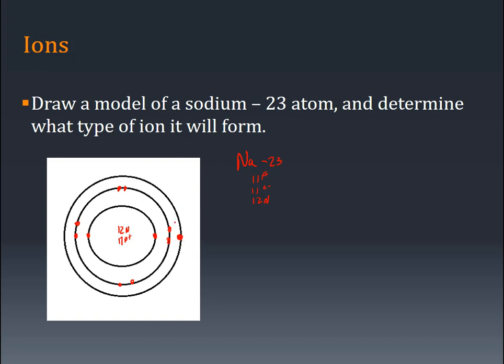But I need 11 electrons, so I have to put one more out on the third energy level. Well, that electron right there is unstable. It's making this thing not have eight. So I could either add seven more to this outer level, or I could get rid of this one. And if I get rid of that one, then I'll have 12 neutrons, 11 protons, and only 10 electrons. So this thing is actually going to pop off an electron and drop down, and what we get is sodium with a 1 plus charge.